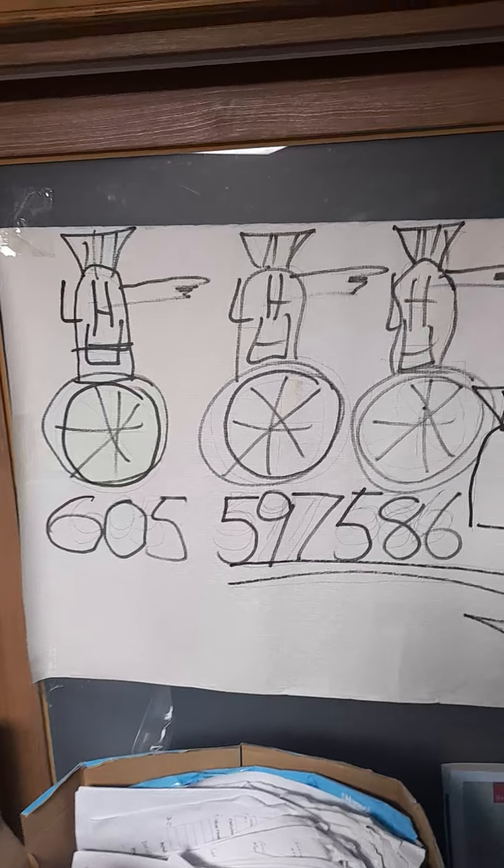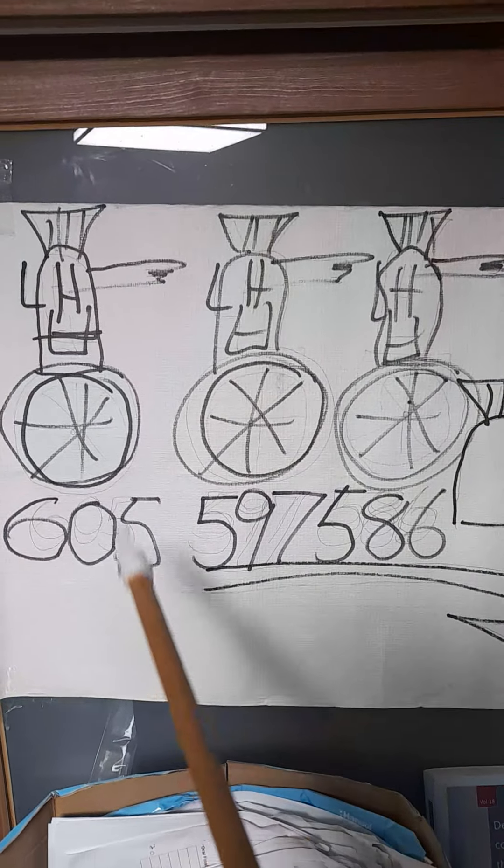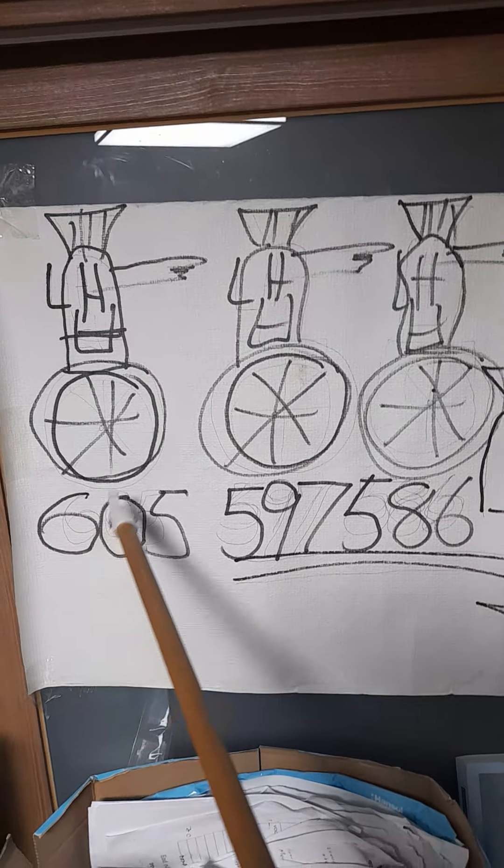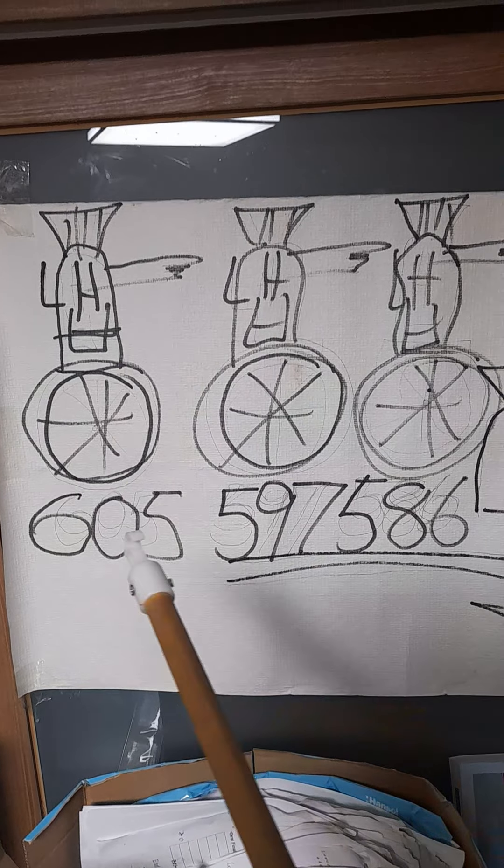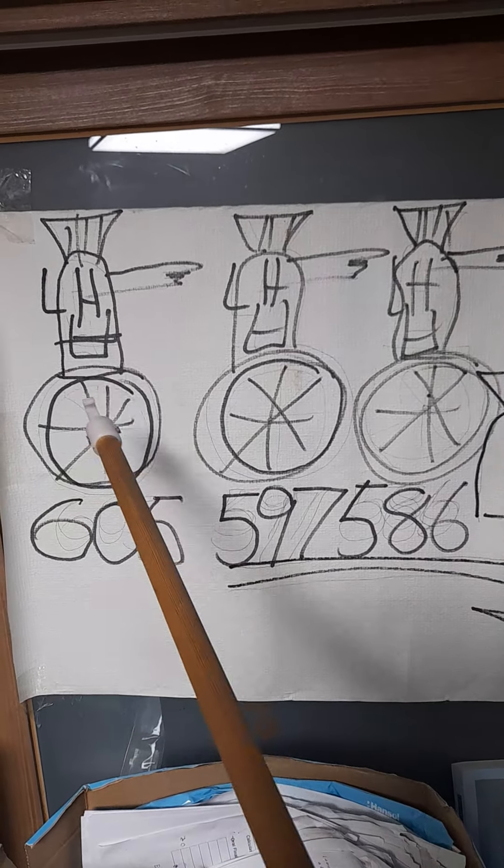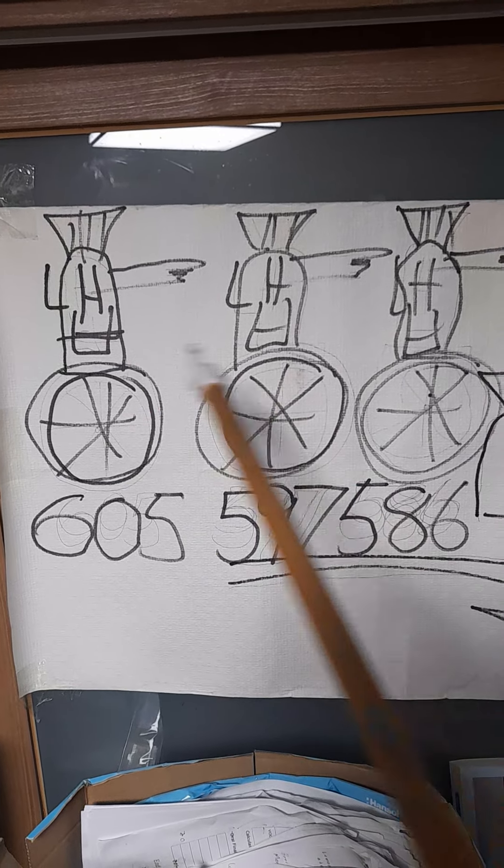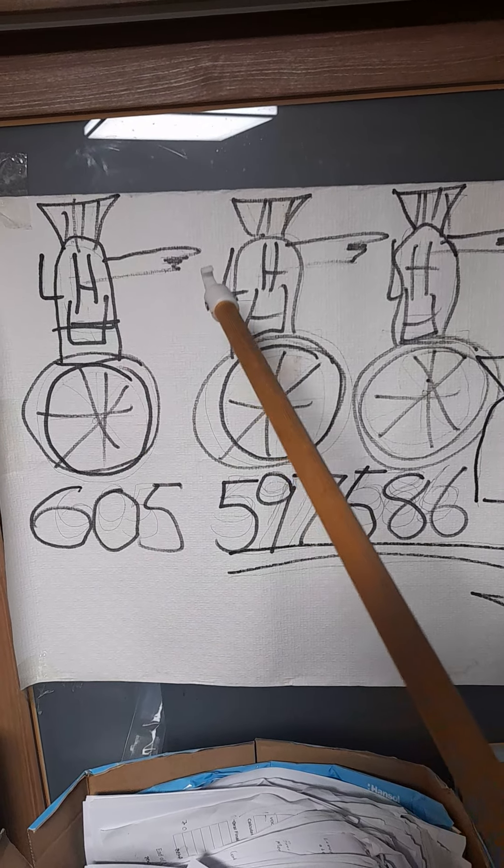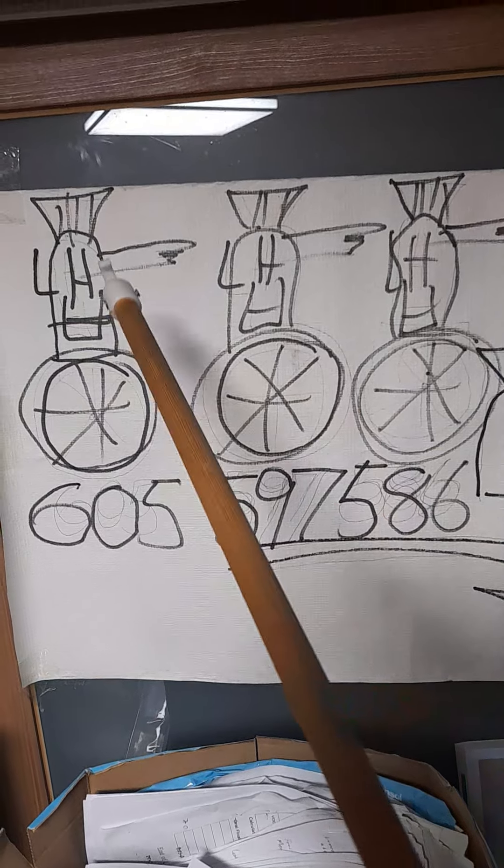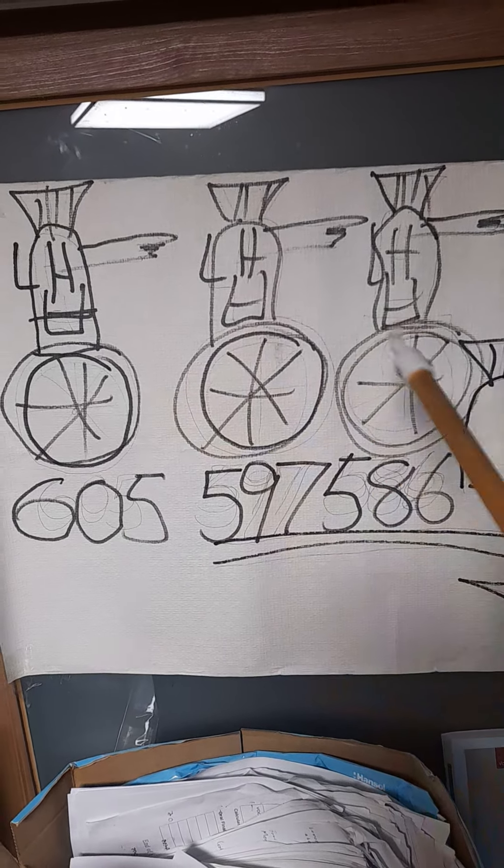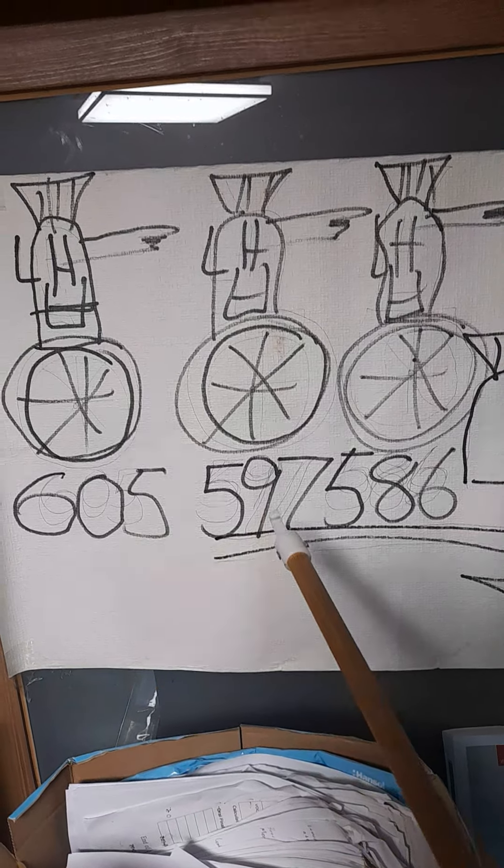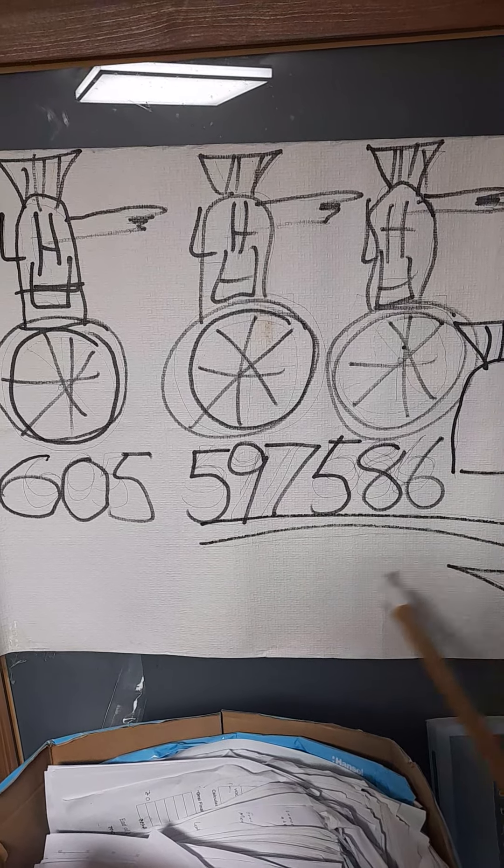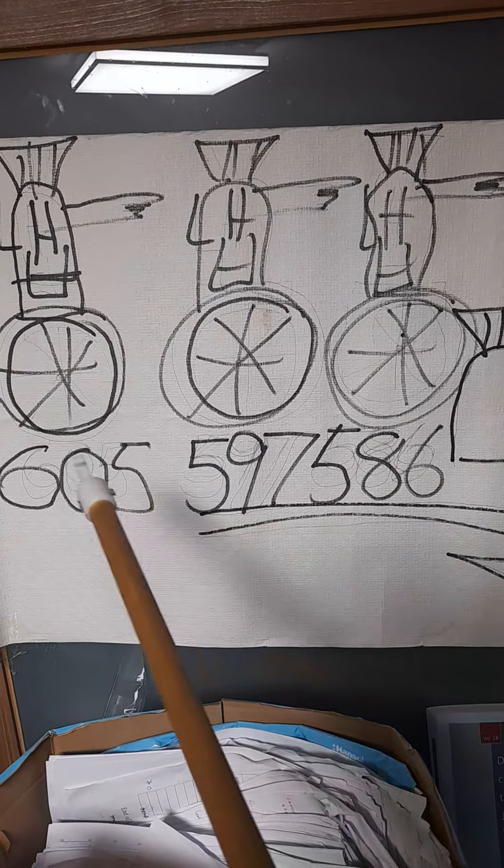You need to understand that Nebuchadnezzar was the guy who first came to Jerusalem, and he took Daniel with some of his friends to Babylon. Nebuchadnezzar had big dreams, and he came three times. Here is the Korean word for Neb, Nebuchadnezzar. Three times he came: 605, 597, 586. In 586, he burned the city completely, destroyed the city. And every time he was taking a couple of people with him.